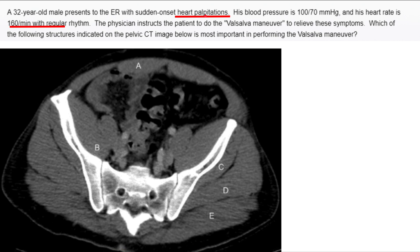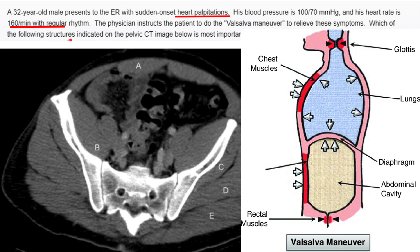This is tachycardia with regular rhythm in a young guy — most likely a case of paroxysmal supraventricular tachycardia. The first-line treatment for SVT is to activate the vagus nerve via the Valsalva maneuver. The physician asks the patient to perform the Valsalva maneuver to relieve symptoms. Which structure indicated on the pelvic CT image below is most important in the Valsalva maneuver?